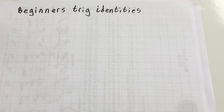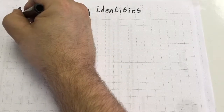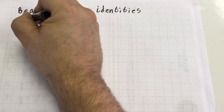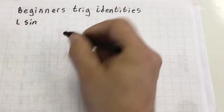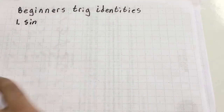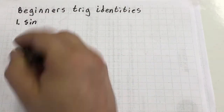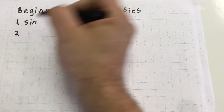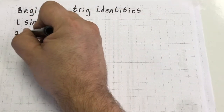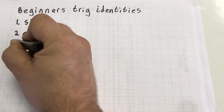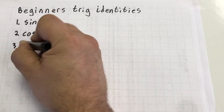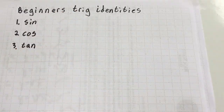Let me go over beginner's trig identities. The most basic trig identity is sine. I'm not going to put theta or anything — I just want to do a general idea, get you a feel of what these trig identities are. Then cosine, and the third one is tangent.